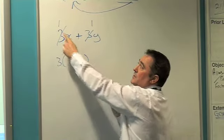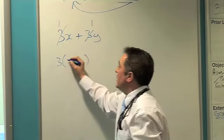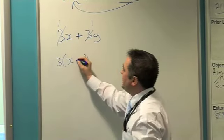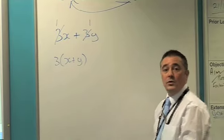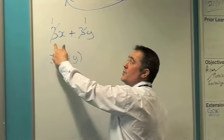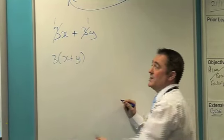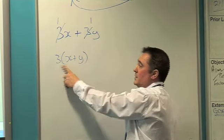I've got an x. So 1 times x, which gives me x, and it's a positive. 1 times y, which gives me y. So I've factorised it fully, 3x plus 3y. Factorised is 3 outside the bracket, x plus y.